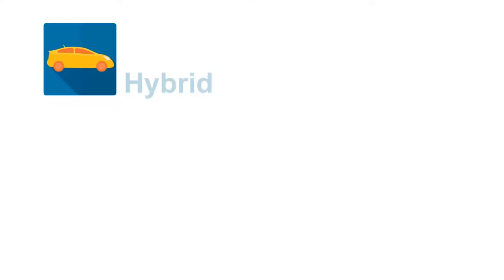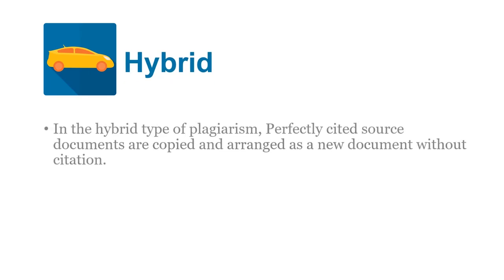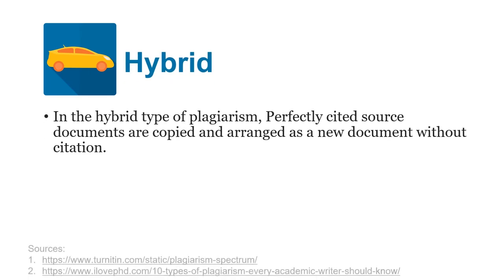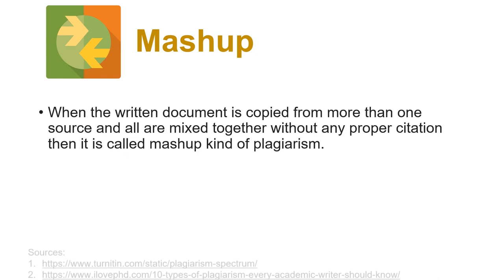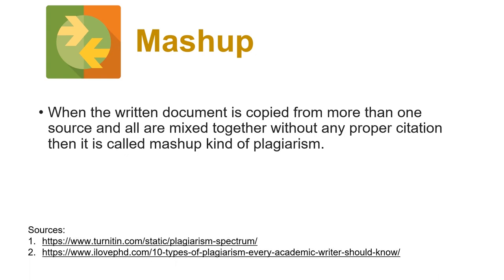In hybrid plagiarism, perfectly cited documents are copied and arranged as a new document without proper citation. In mashup, a writer takes a lot of material from different sources and also writes some content on their own, then mixes the sections taken from other papers with their own writing without any proper citation — that is why such plagiarism is known as mashup plagiarism.